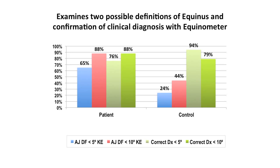With the knee flexed, the patient group was 17.9 degrees and the control group was 22.3 degrees. They compared clinical diagnosis utilizing a goniometer with an equinometer — a device hooked to a computer to formally measure ankle joint dorsiflexion. The percent of patients with less than 5 degrees of dorsiflexion was 65% in the symptomatic group and only 24% in the control group. Less than 10 degrees was 88% for the patient group and 44% for the control group. Correct diagnosis was verified 76% of the time at less than 5 degrees in the patient group and 94% in the control group.